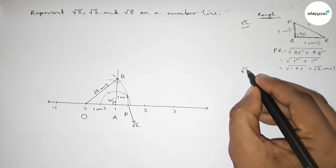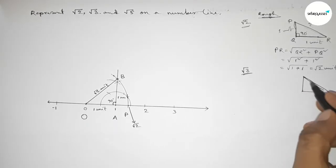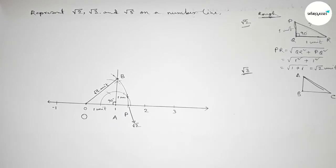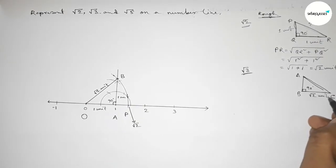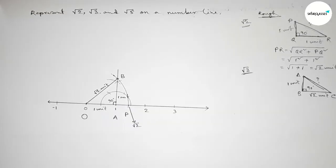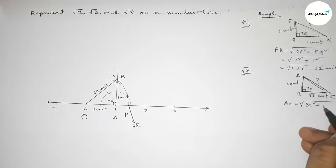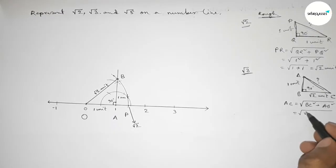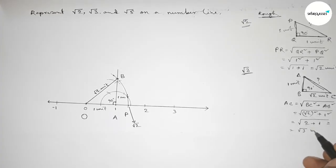Now we have to represent root 3 on the number line. Roughly drawing a right angle triangle ABC with a 90 degree angle. Taking base equal to root 2 unit and height equal to 1 unit. By Pythagoras theorem, hypotenuse AC equals root over root 2 squared plus 1 squared, which is root over 2 plus 1, so this equals root 3 unit.